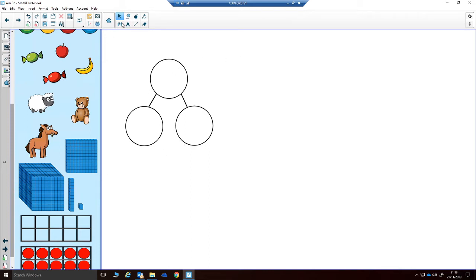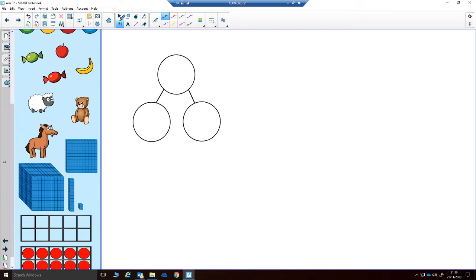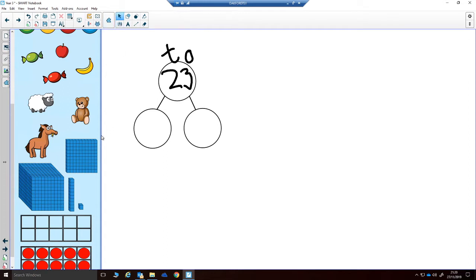First of all, let's write down a number. Let's make it nice and simple - let's make it 23. So I know I've got two tens and three ones. Let's physically put those in there. We know these are tens, so how many tens are we going to have in the tens part? Two tens, because I've got 20.